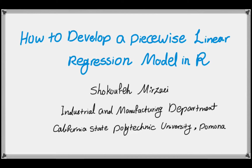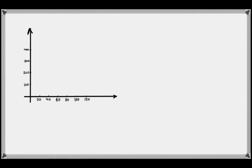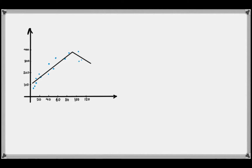Hello everyone, this is Mirzaei from Cal Poly Pomona. In this lesson we are going to learn how to develop a piecewise linear regression model in R. The example we are going to investigate is the same example we previously saw — a dataset called Reynolds from chapter 4 of the book Essentials for Business Analytics. Previously we developed a quadratic regression model for this dataset. An alternative to a quadratic model is a piecewise linear model, made up of pieces of linear lines connected through common points.